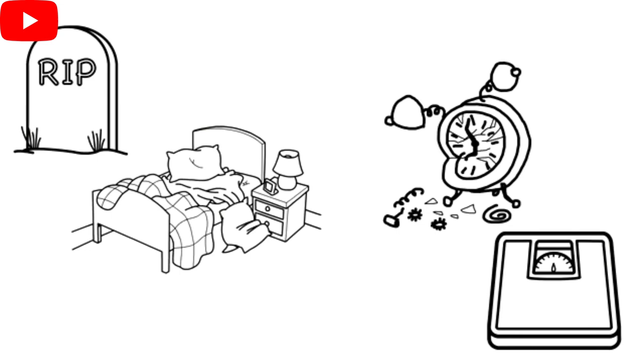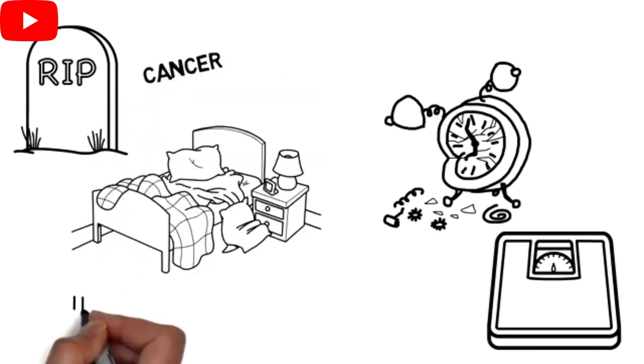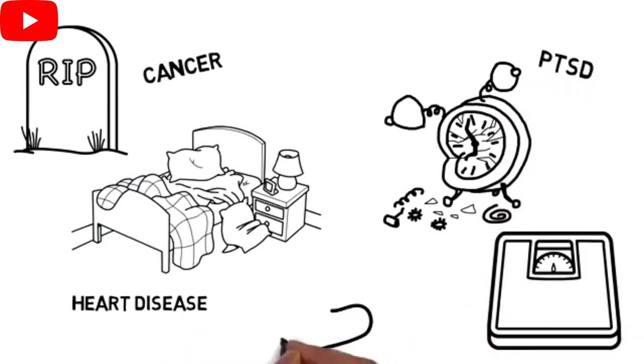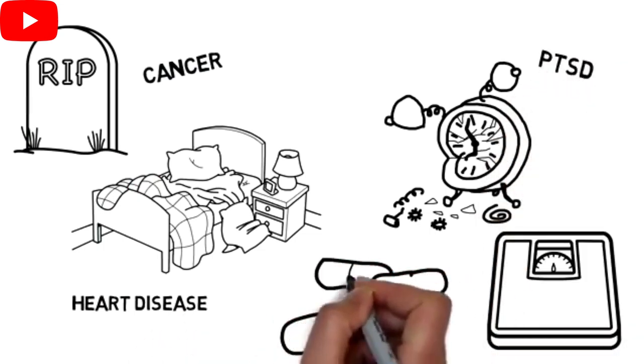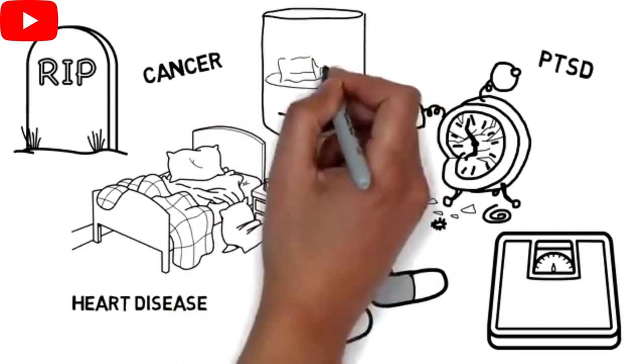Sometimes depression happens when a person has other serious conditions like cancer, heart disease, or PTSD. Also, a person may be abusing drugs or alcohol or withdrawing from them and could also be suffering from depression.